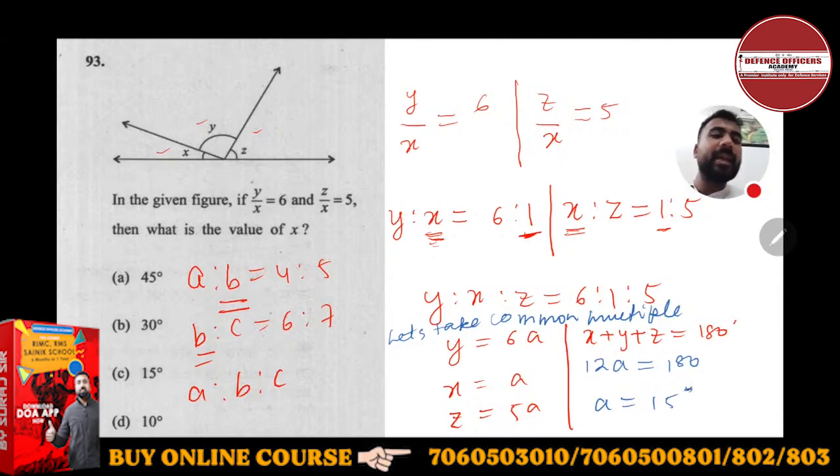a ki value will be 15 degrees. The question asks for x, and x equals a, so x will be 15 degrees. Very simple. C is the right answer.